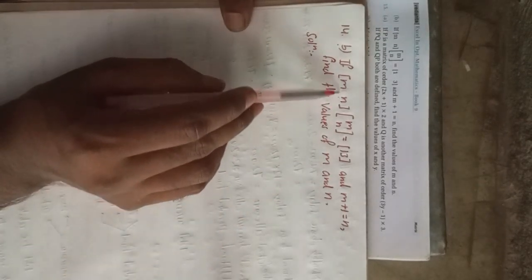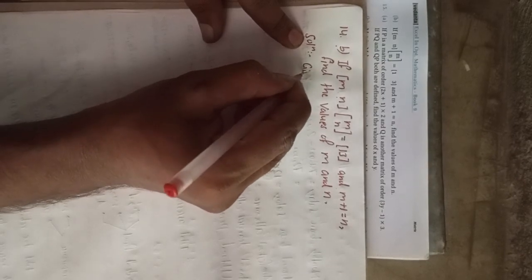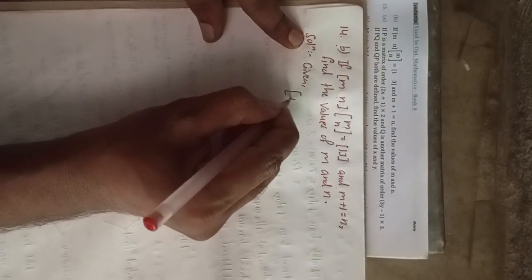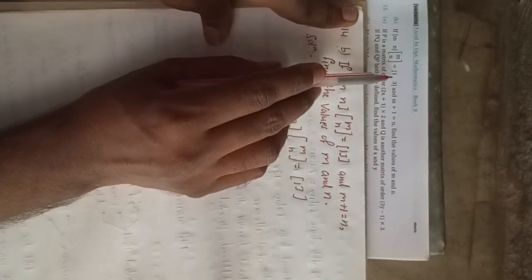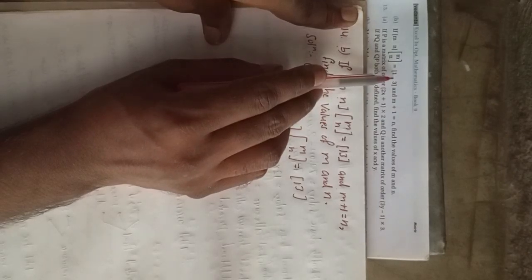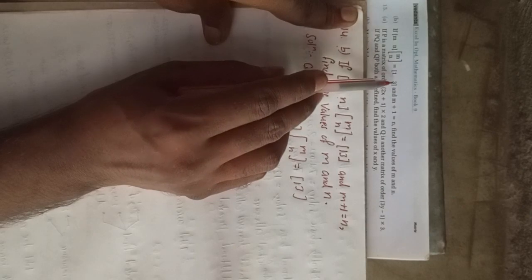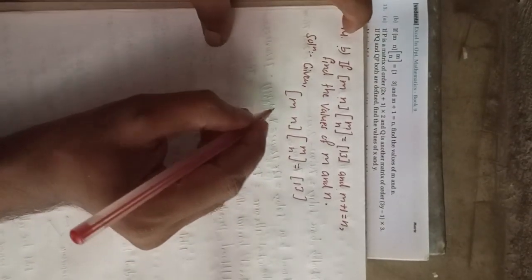This is the row matrix because there is only one row, and this is the column matrix with only one column. So what is given here: m×n (the row matrix) times m×n (the column matrix) is equal to 13. Note: in the book this is a print mistake — it is 13 (thirteen), not one and three separately.